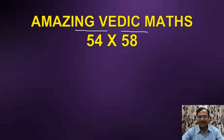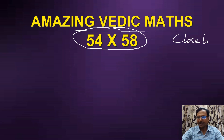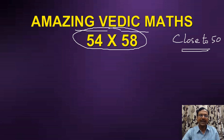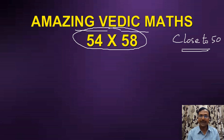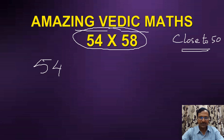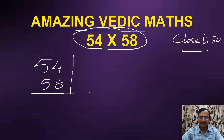The amazing Vedic math trick I'll be telling you is how to multiply two numbers which are close to 50. The two numbers I have written here are very close to 50 — 54 and 58. We'll do this without using the traditional approach, and that is the beauty of Vedic maths. So let's write 54 and 58 one below the other as we write in traditional multiplication, but I will put lines like this.